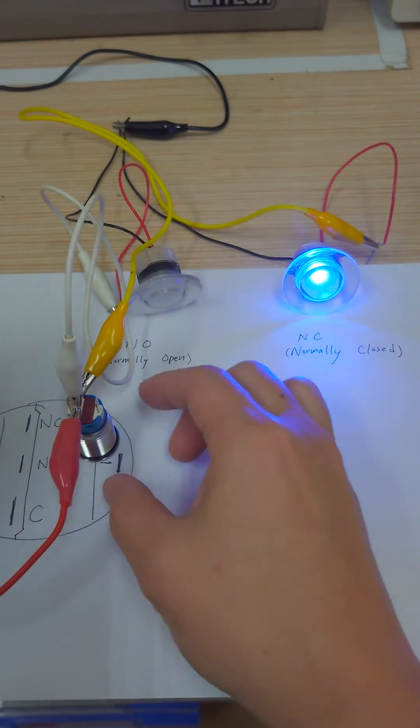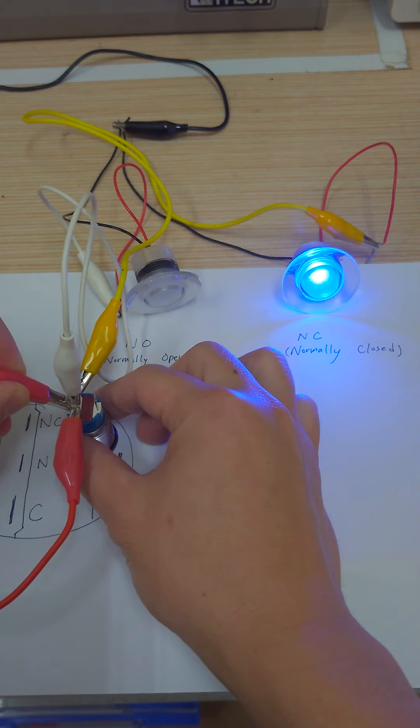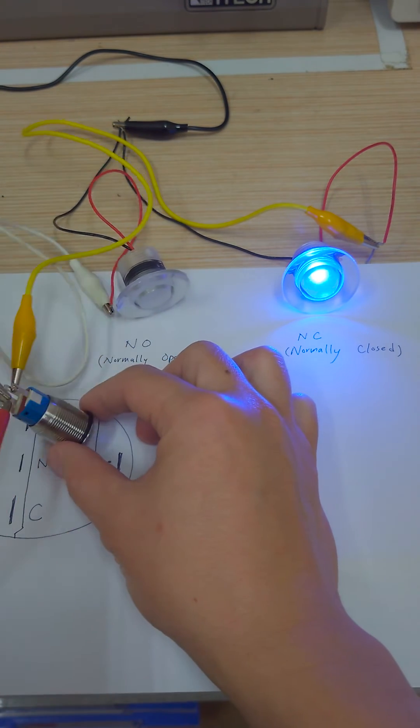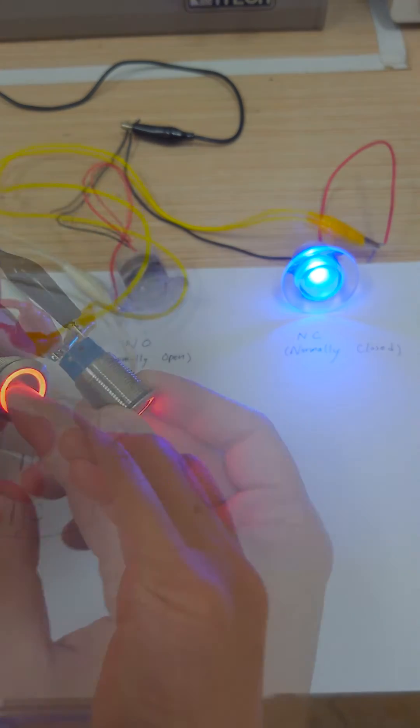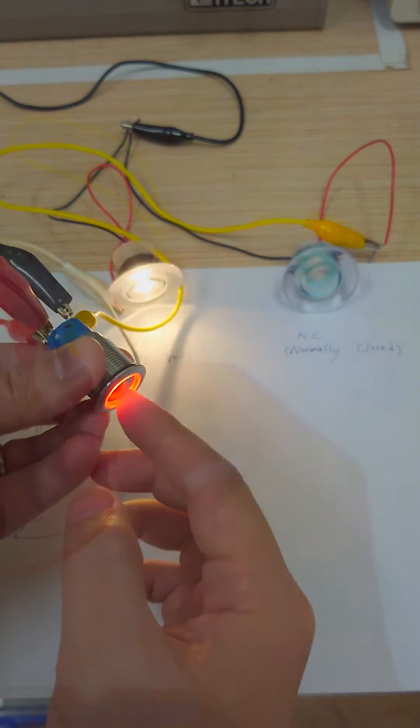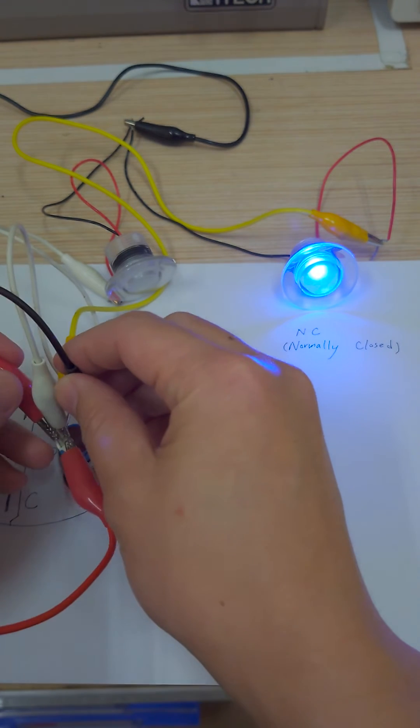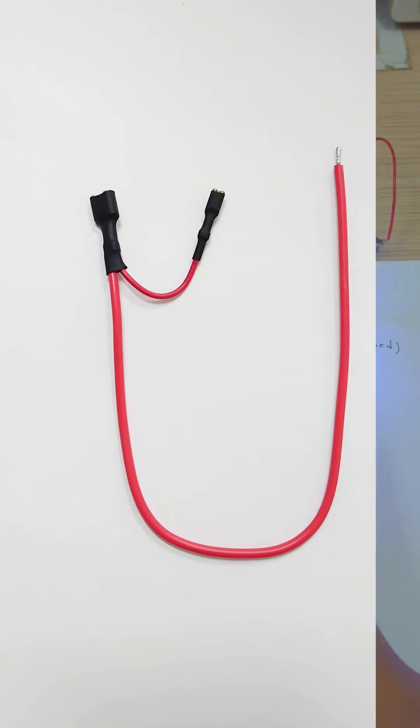If you connect the power source positive to the LED positive and the negative to the LED negative, you will see the ring lights up. The LED ring will be always on because the LED positive and negative are always connected.